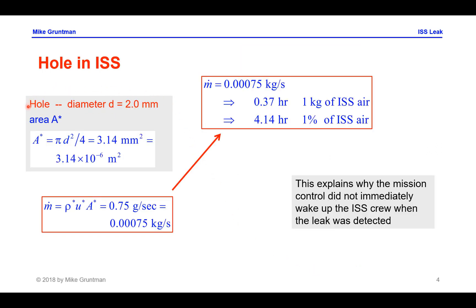So the hole diameter, let us assume to be 2 millimeters. We can translate this immediately. We'll obtain the area in square meters and the mass flow through the hole would be the density at the exit times speed of the air at the exit times the area of the exit. Plugging the numbers in, we will get the leak rate, the mass flow rate, 0.75 grams per second, which is a little bit less than one gram per second.